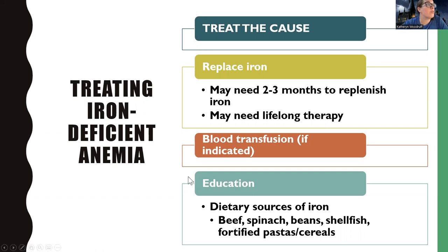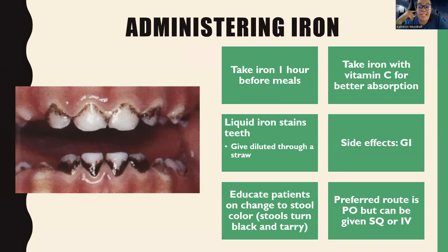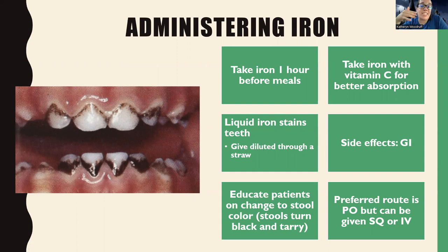Let's talk about administering iron. Iron literally looks black, so you're going to be worried about staining. If you're giving it IV, you're worried about it staining clothes or the patient's skin. If you're giving it orally as a liquid, it can stain the teeth — so you have to be super careful. When giving oral liquid iron, always give it diluted through a straw to decrease staining of the teeth.